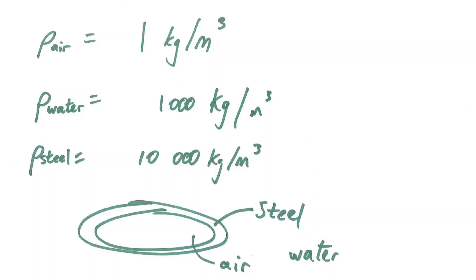Let's take this into a real-world context and consider a submarine. Rough figures: the density of air is about 1 kilogram per meter cubed, and steel is about 10,000 kilograms per meter cubed. So we have a submarine — there's a cross-section through a submarine, some of it is steel, there's air in the middle, and water outside. What do you think the ratio of the masses of the air and the steel should be in order for the submarine to be neutrally buoyant?